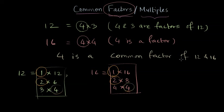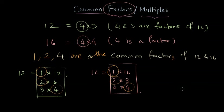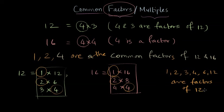Since 4 is a common factor of 12 and 16, but it's not the only one — we also have 1, 2, and 4. So the common factors of 12 and 16 are 1, 2, and 4. I hope you understand the concept of factors. Now let's see what multiples are. The numbers 1, 2, 3, 4, 6, and 12 are all factors of 12.